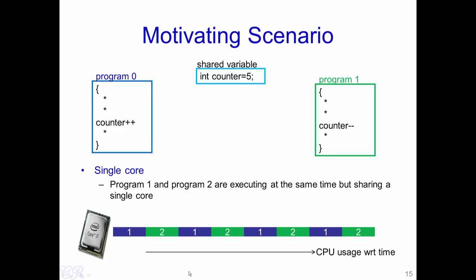Let us explain what synchronization is with this motivating scenario. We have two programs — program 0 and program 1 — and a shared variable defined as counter, a global shared variable: int counter = 5. In program 0 we are incrementing the counter by 1, while in program 1 we are decrementing the counter by 1. When we execute these programs on a single core processor, program 0 executes for some time, then there is a context switch, then program 1 executes, assuming round-robin scheduling with no other processes present.